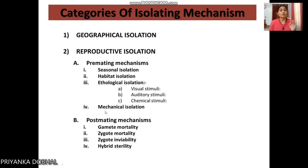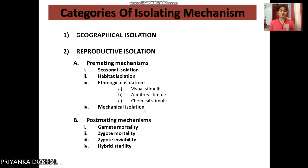The second type under pre-mating is mechanical isolation, which occurs due to structural changes in individuals, such as incompatible body structures, resulting in mechanical isolation.